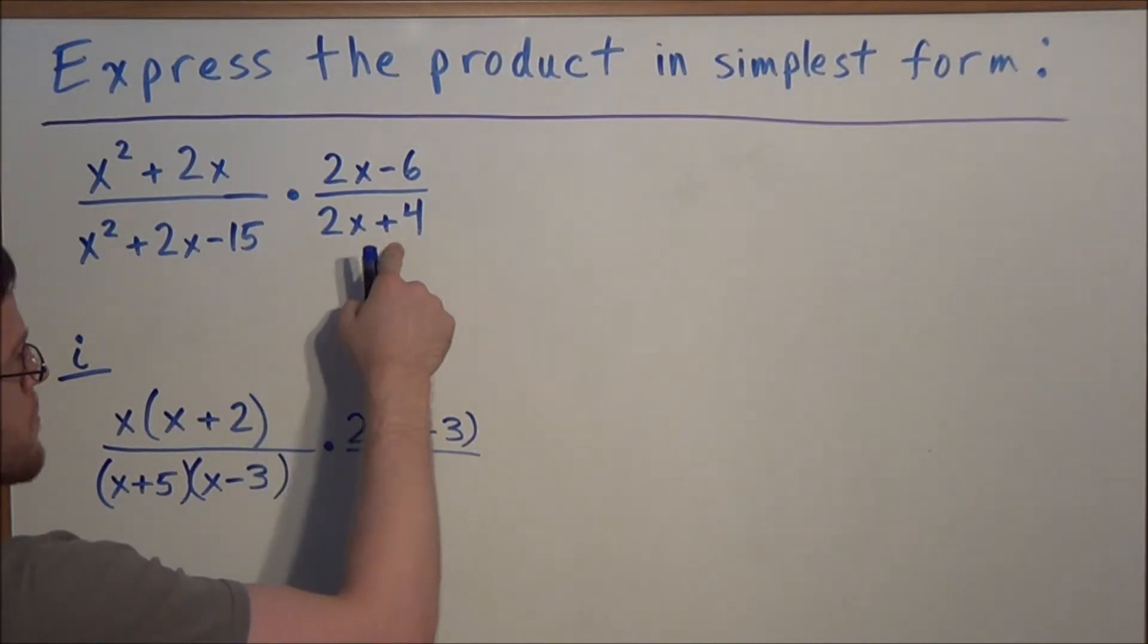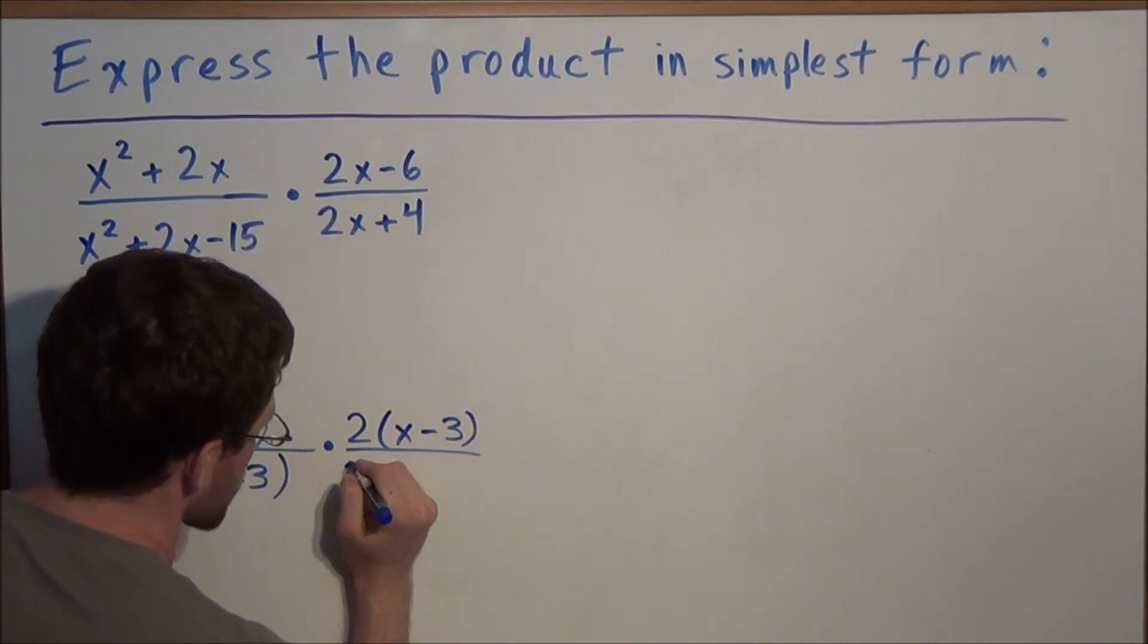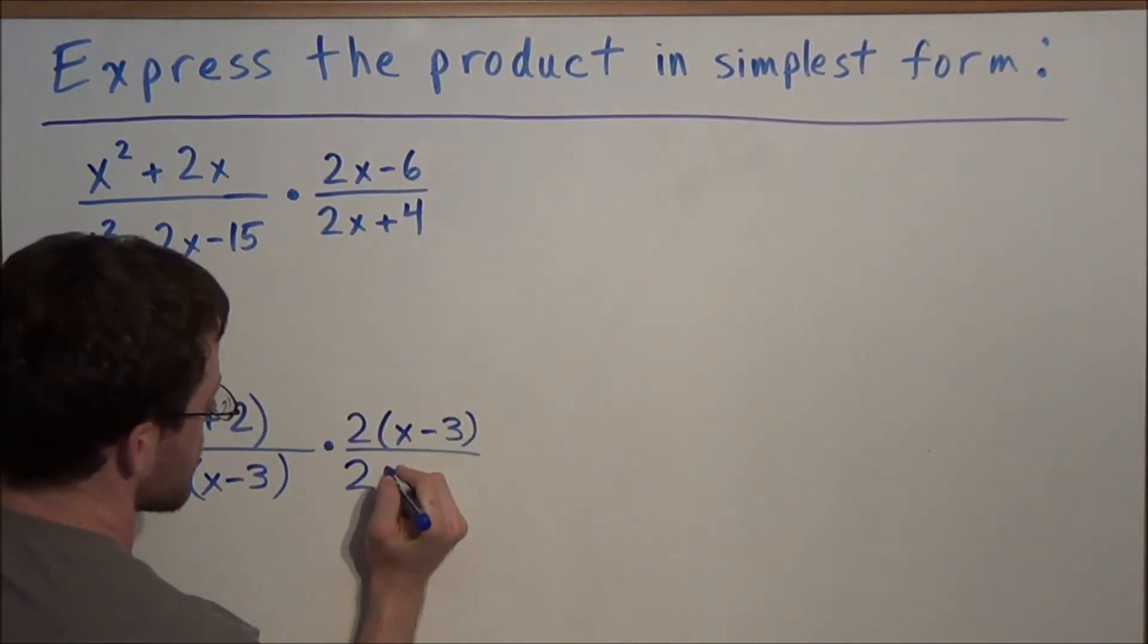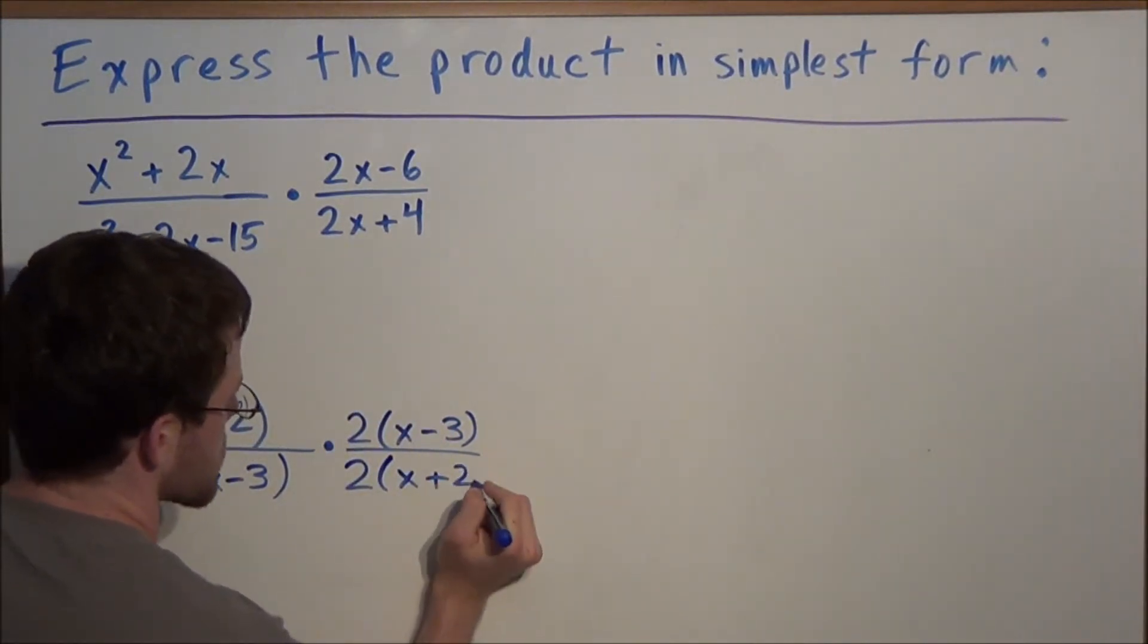And now something very similar for the second piece, the denominator of the second fraction. We could factor out a greatest common factor of 2 and we're left with x plus 2.